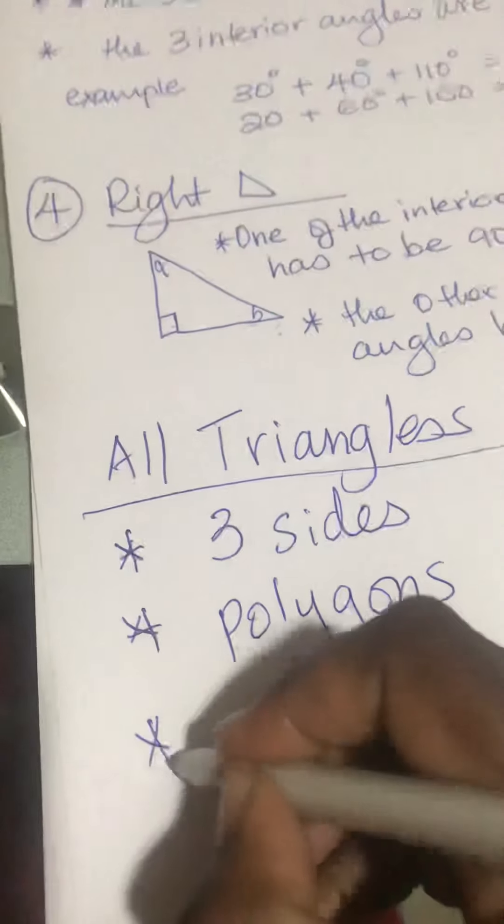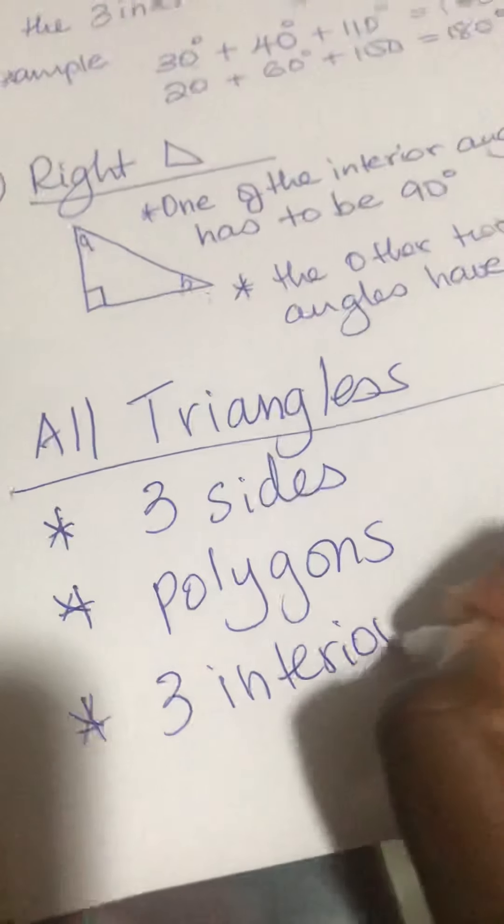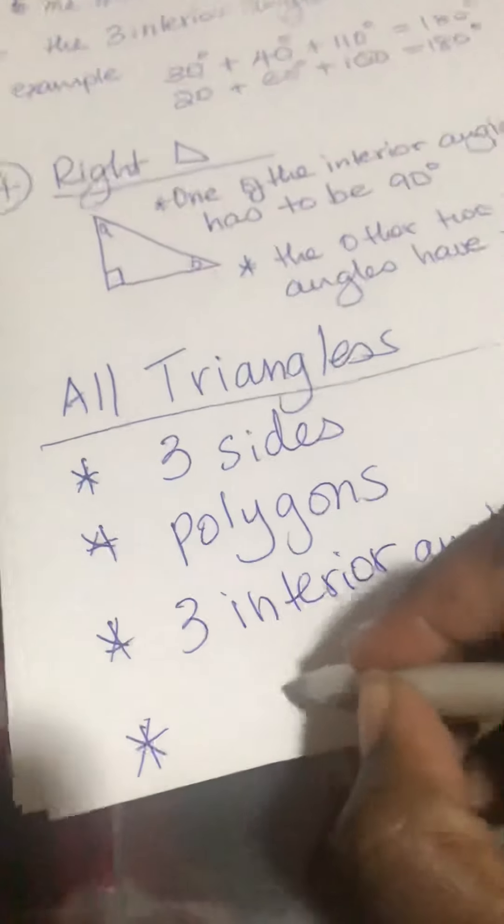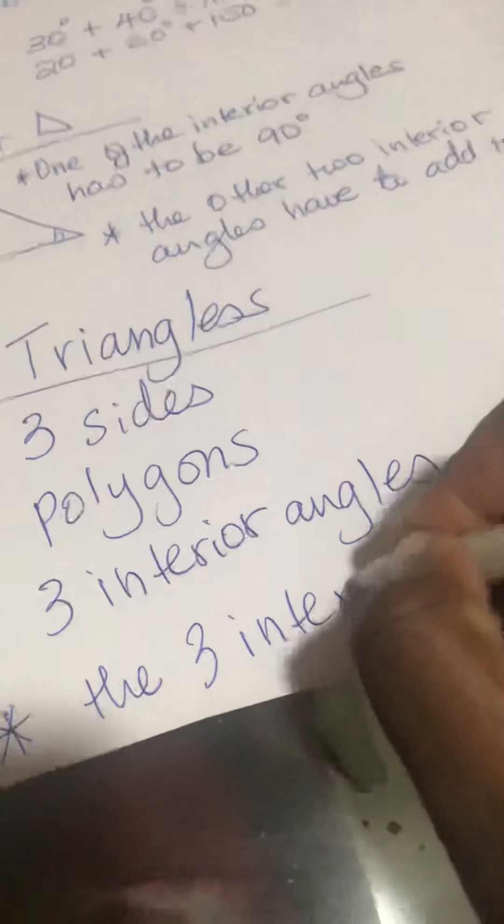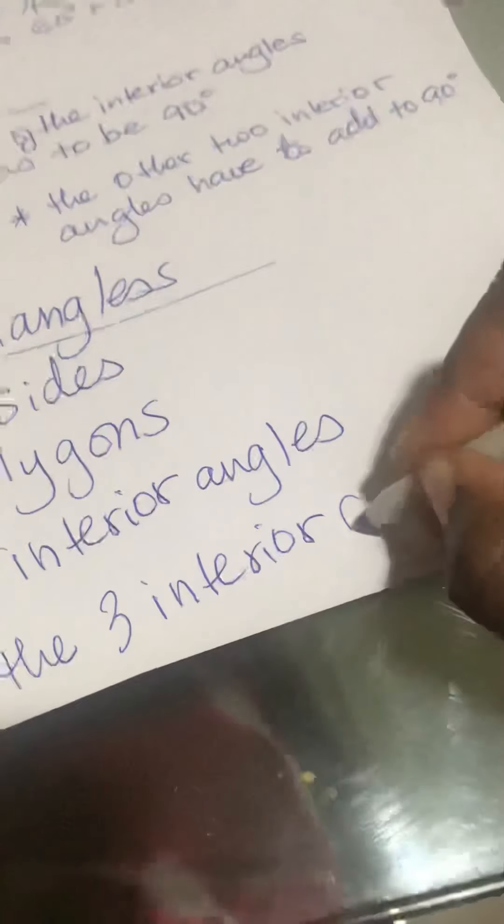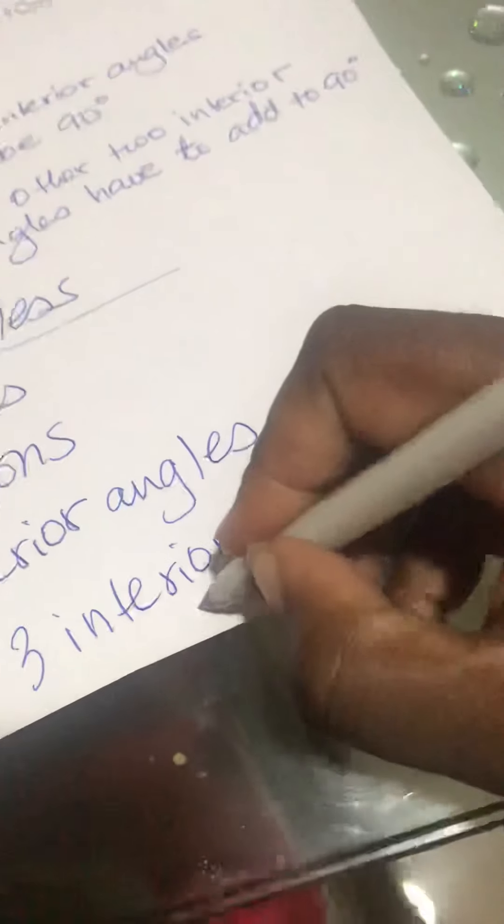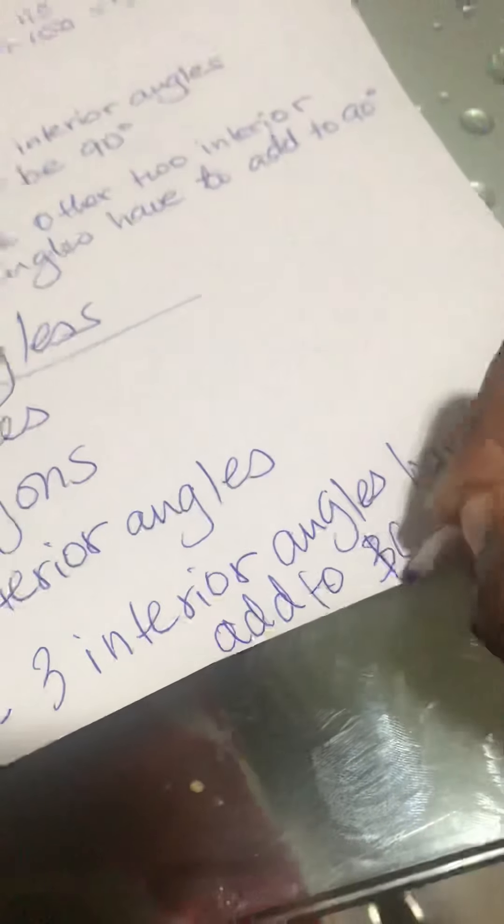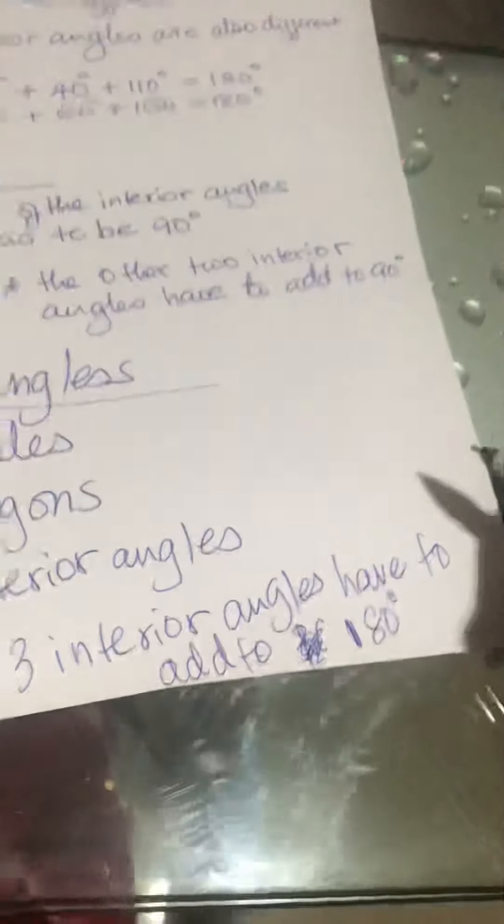All triangles have three interior angles. All triangles—the three interior angles have to add to 180 degrees.